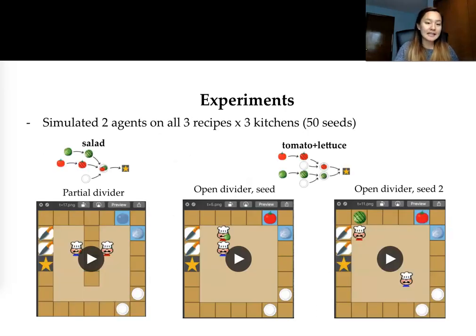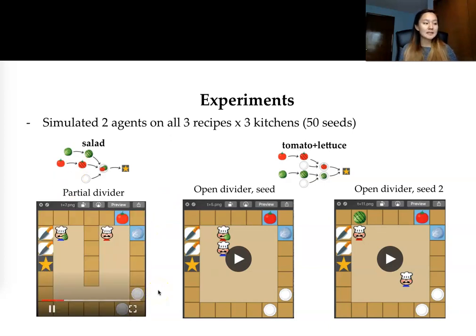Now here what you're going to see is an example video of our full model on different recipes and environments. Here is the salad recipe demonstrated on the partial divider where you can see that these agents in a completely decentralized manner are coordinating on how to pass objects across the counter and then finally deliver to the goal.